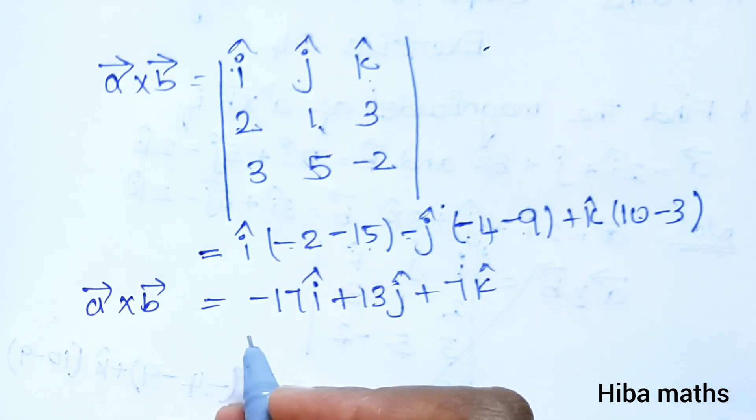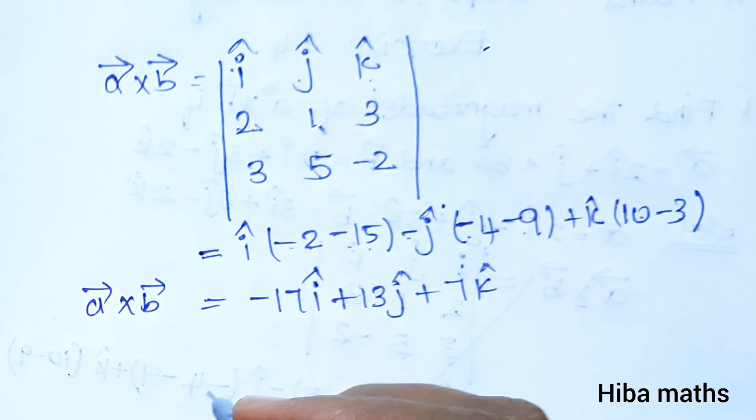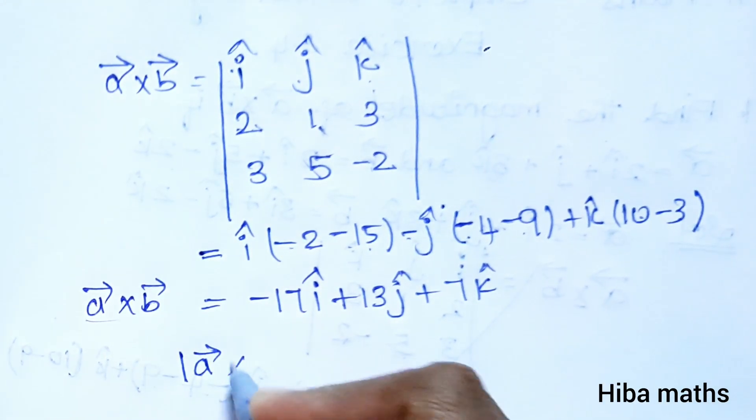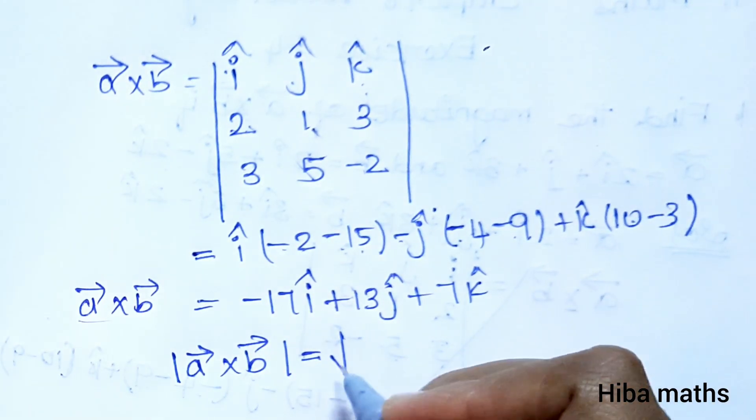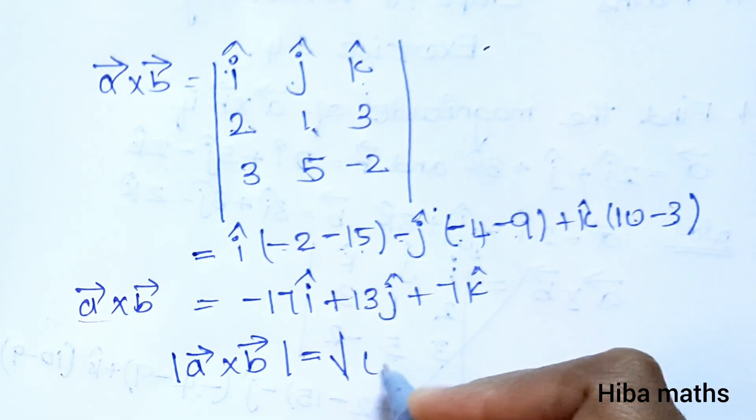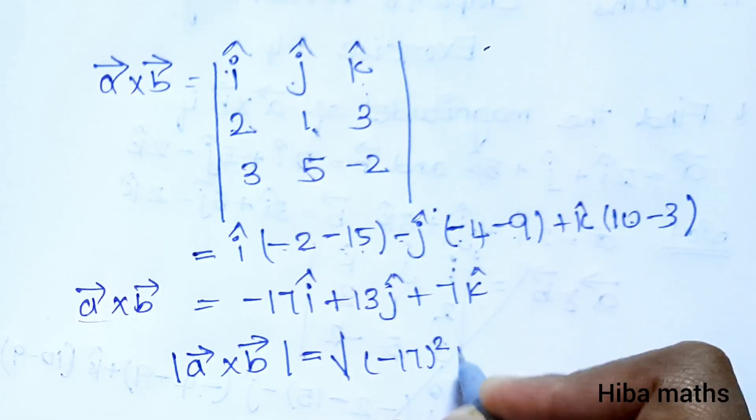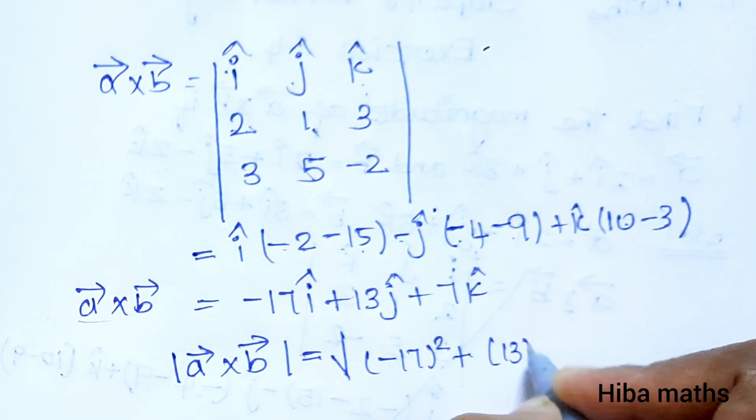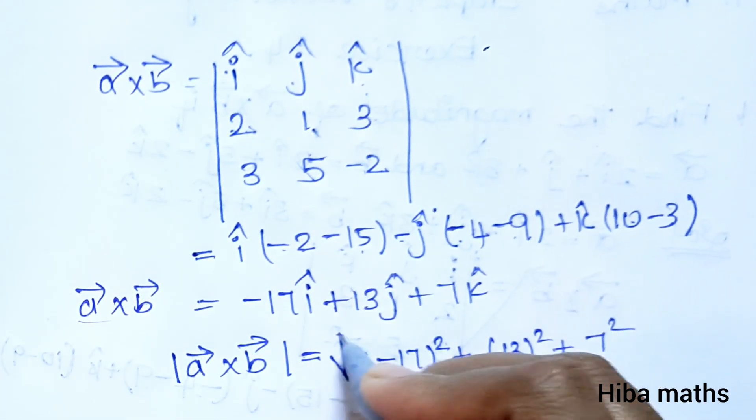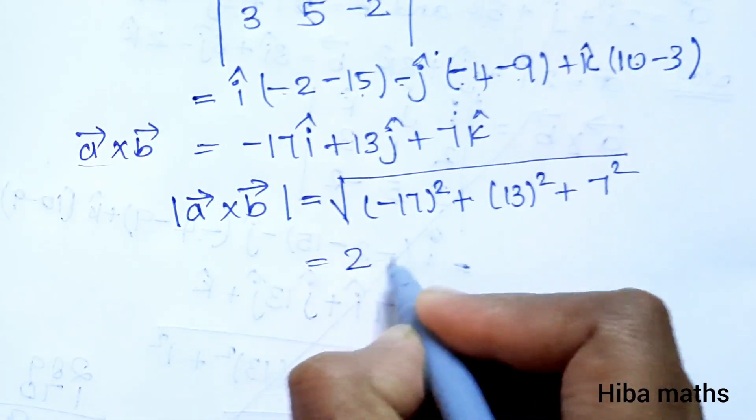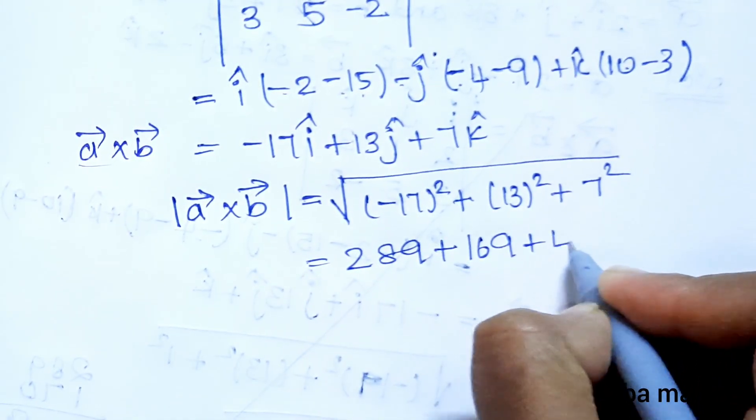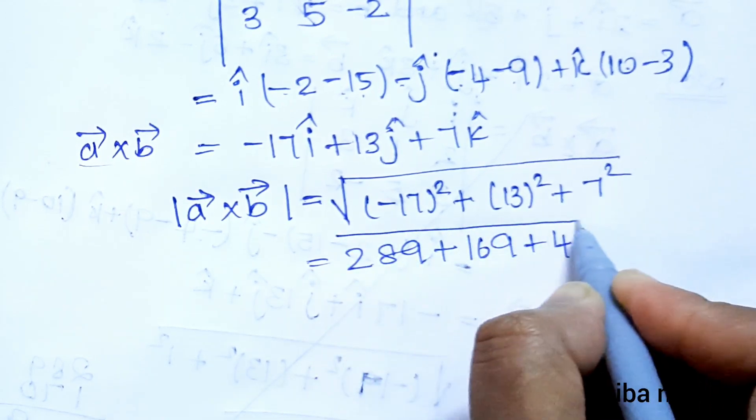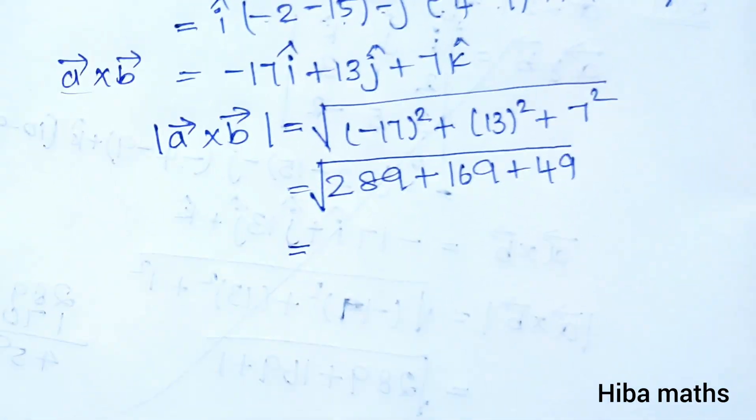The question asks for the magnitude of A vector cross B vector. The modulus of A vector cross B vector is equal to the square root of (-17)² plus (13)² plus (7)². This equals square root of 289 plus 169 plus 49.